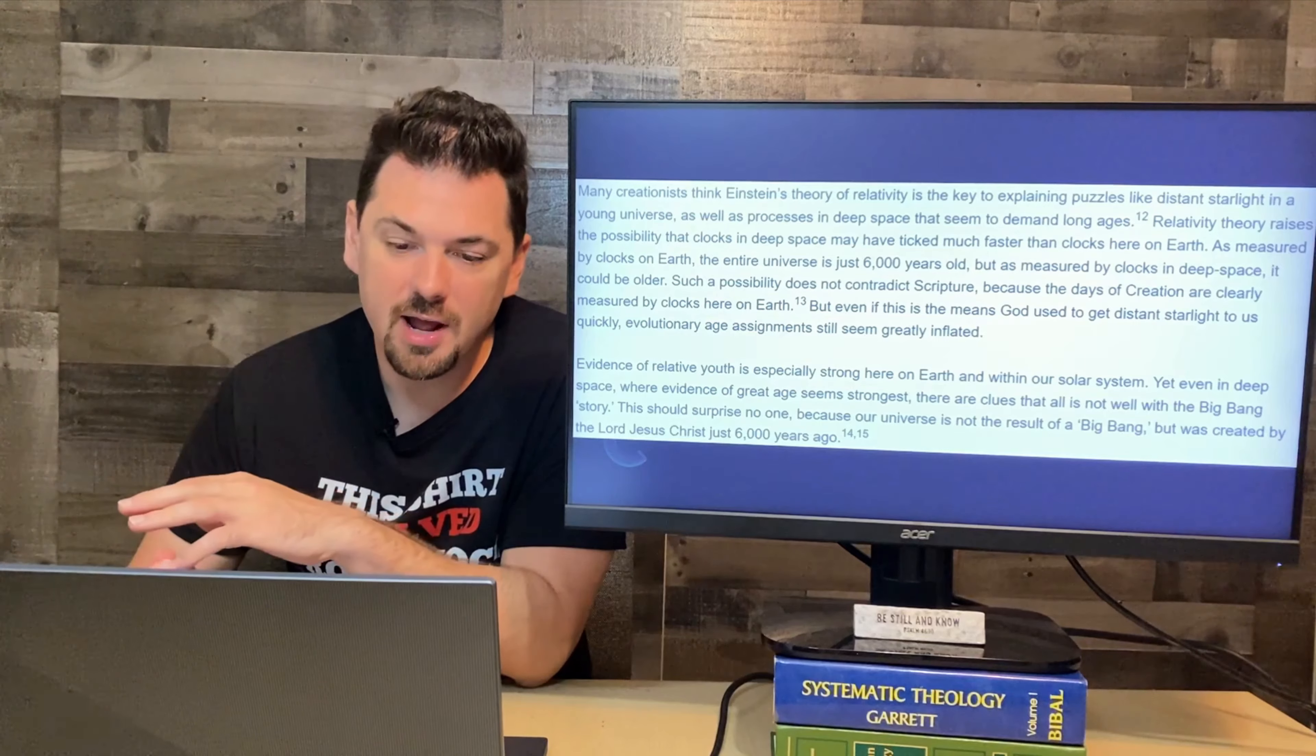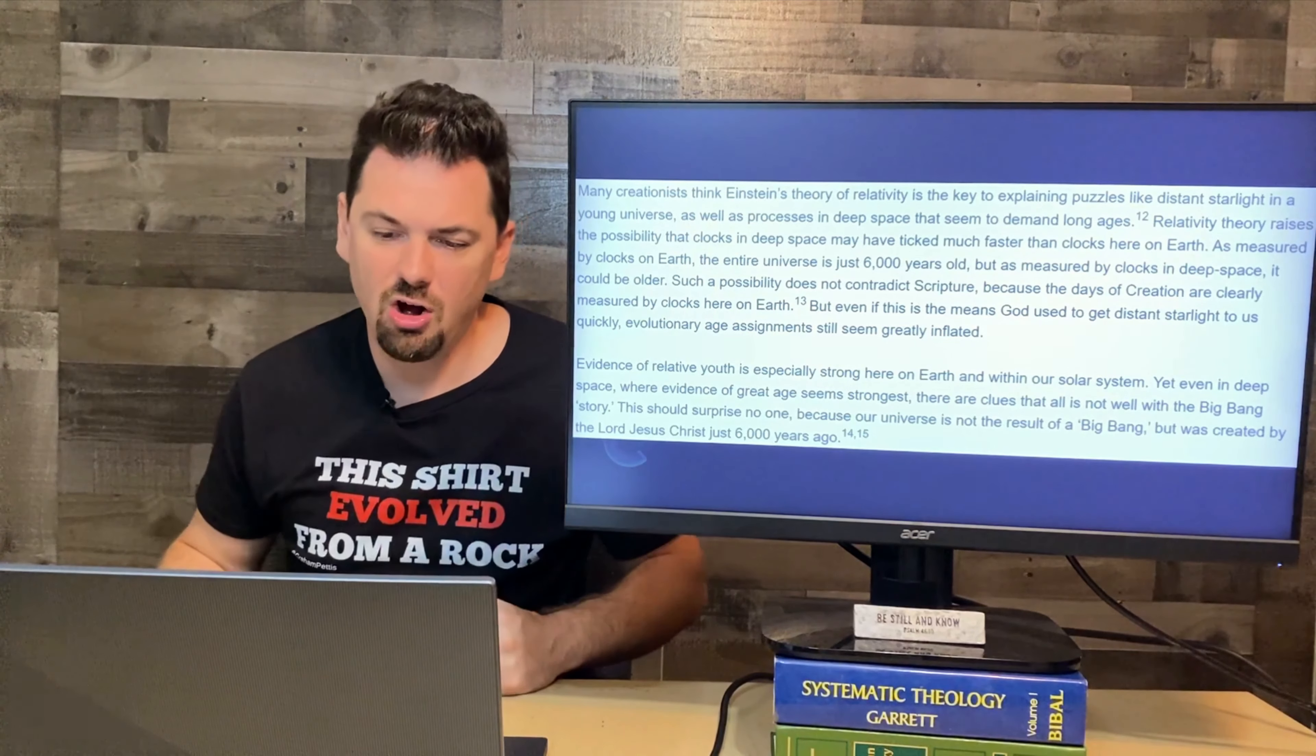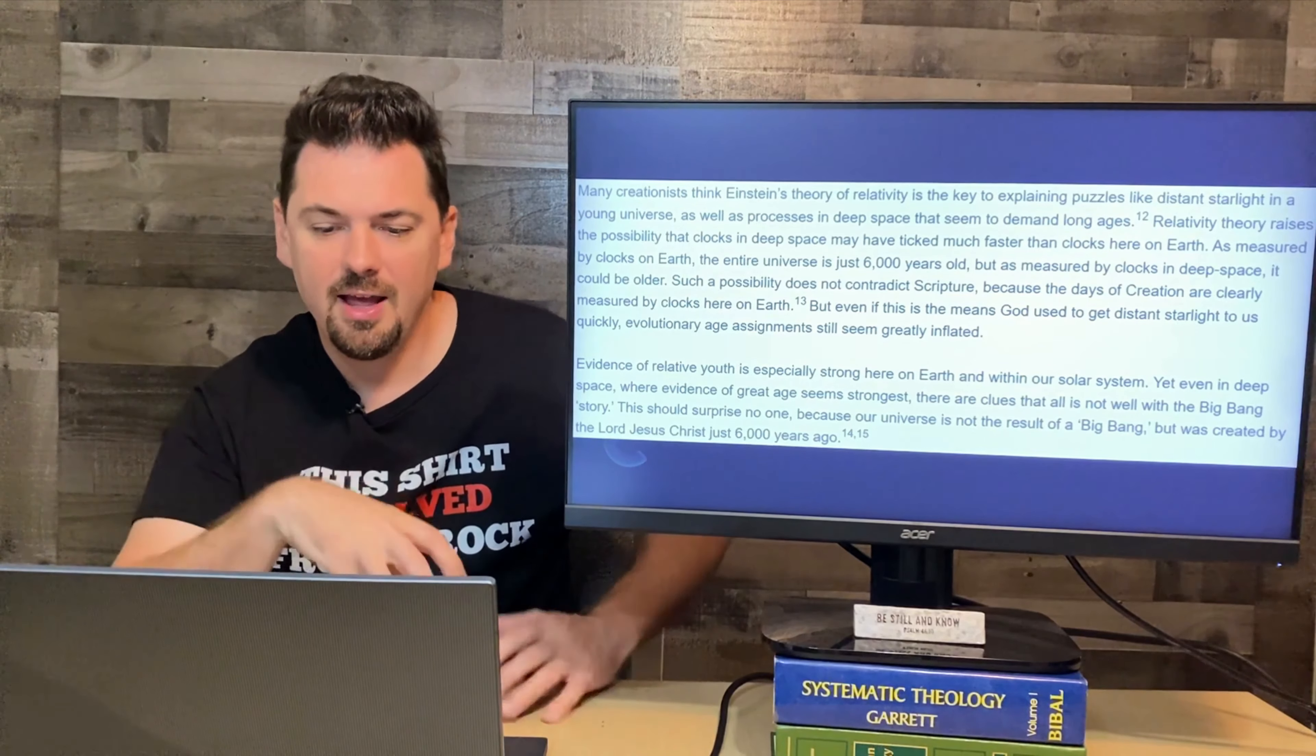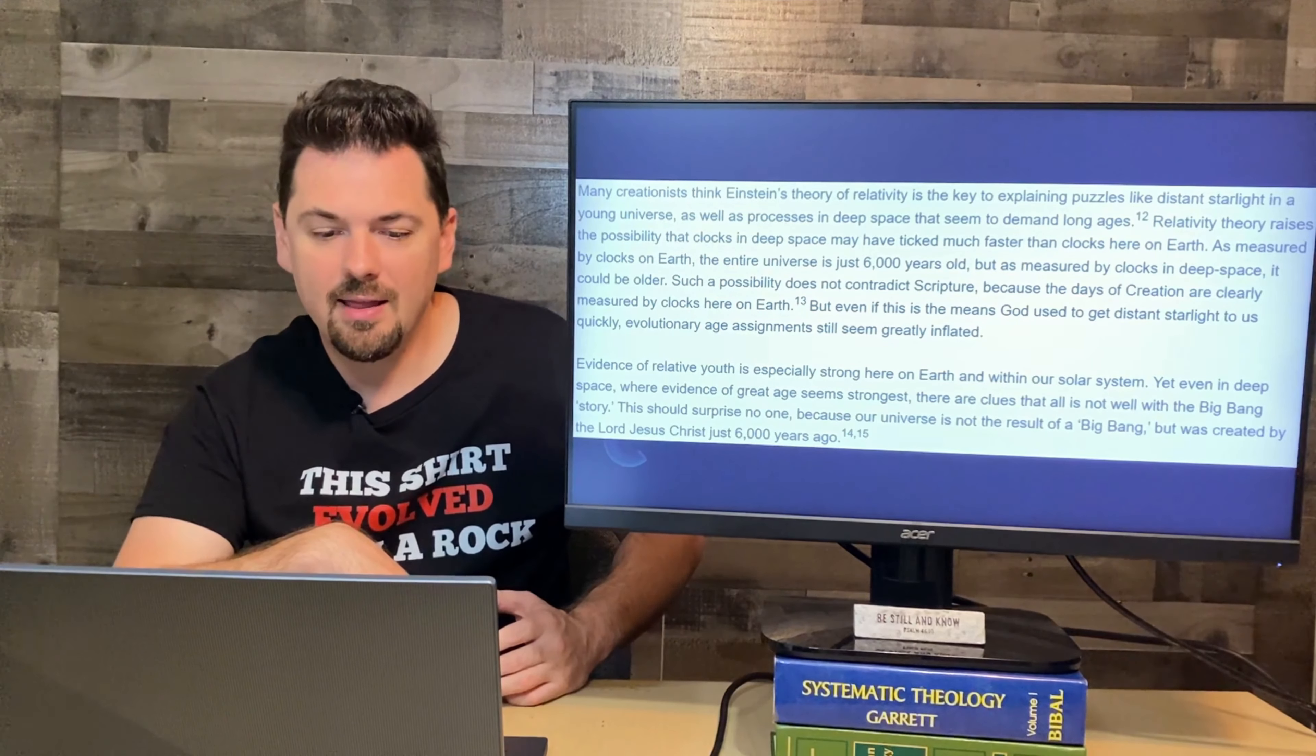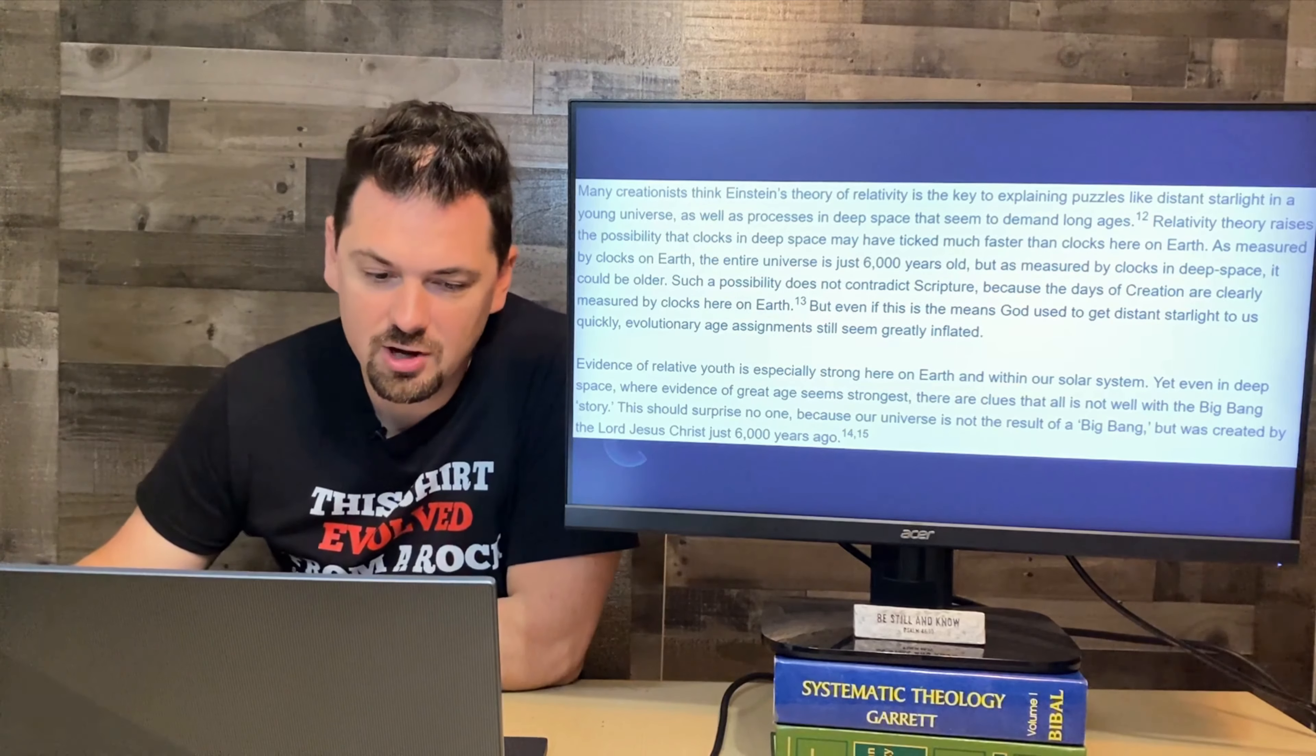Now, I'm surprised the Institute of Creation Research didn't mention those scriptures where it talks about that God stretched forth his hand. It says it all throughout scripture, Isaiah and the book of Psalms. They're usually right about stuff that I agree with. I'm just surprised they didn't throw those scriptures in here. They looked at this scientifically. I know we always try to look at stuff like that. But at the end of the day, we have to look at God's word and what it says. And he says when he created everything, he stretched it out. I find it interesting that they didn't talk about that.